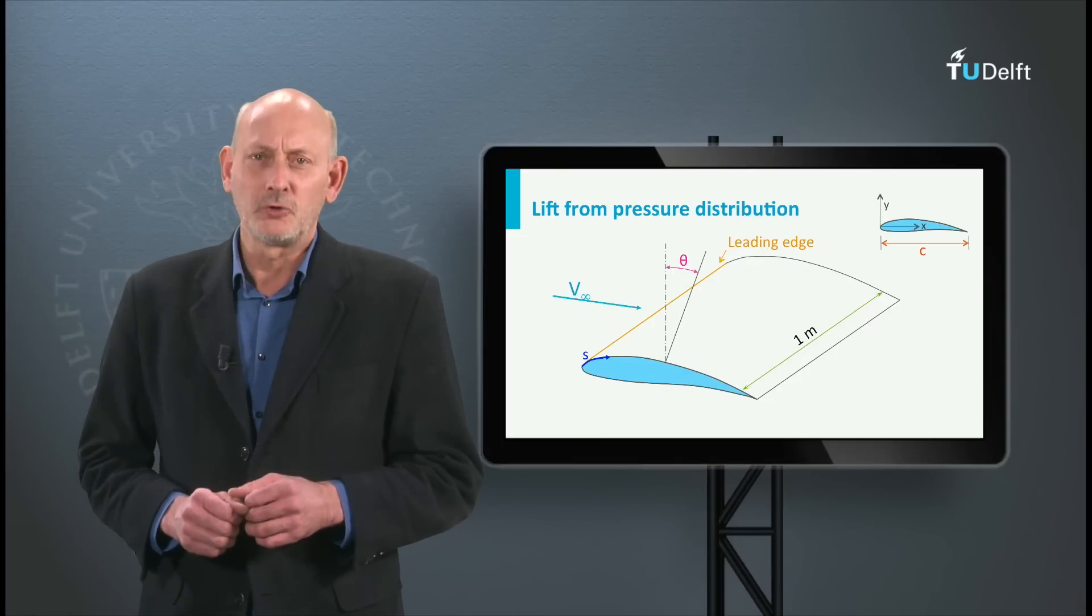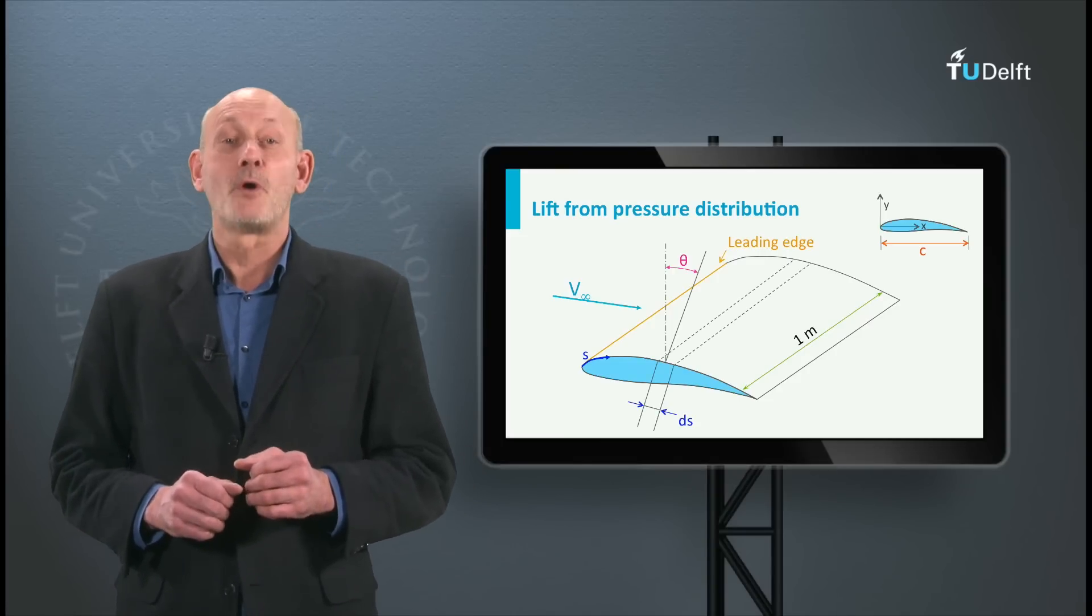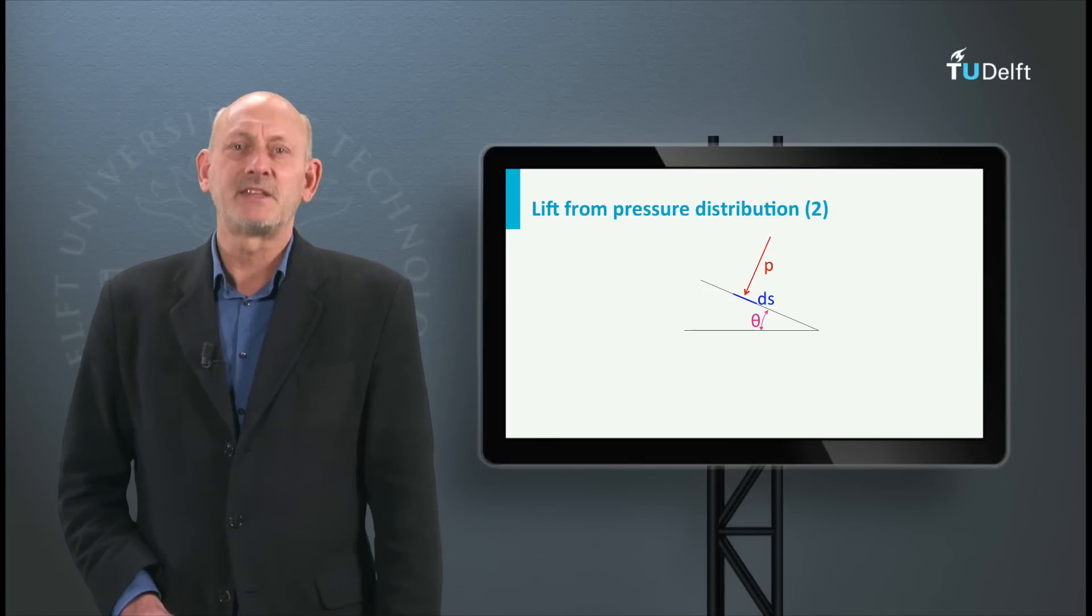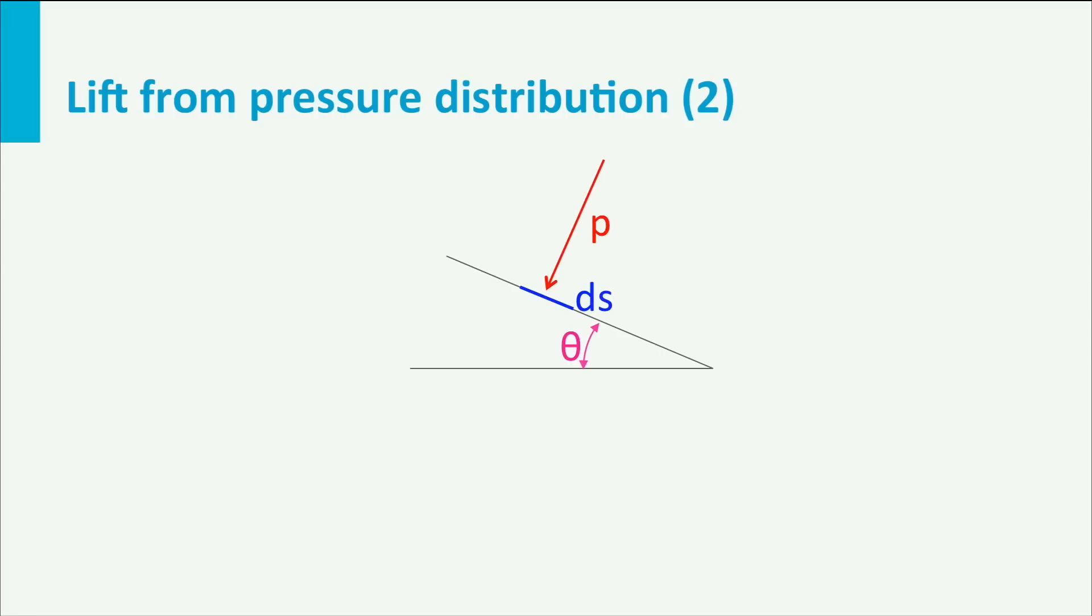Let's assume that the contour is made up of many very small elements ds. There is a pressure p acting on an element ds. Now suppose we would like to know the normal force, so in y direction, on the piece of a wing with span 1 meter. The force on the strip ds with span 1 is pds. That is pressure times area.